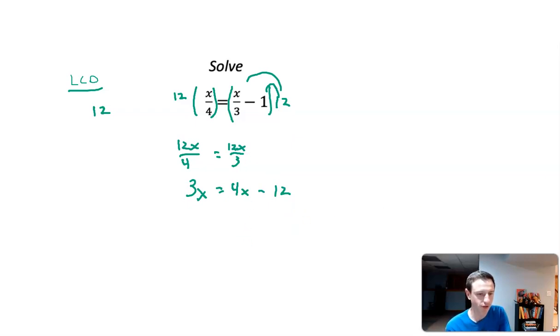Then we want to start solving this. I want to get the x's over to one side, so it's just solving a multi-step equation. I'm going to subtract 4x from both sides. 3x minus 4x is negative x equals negative 12. Then we divide by negative 1, and x equals positive 12.